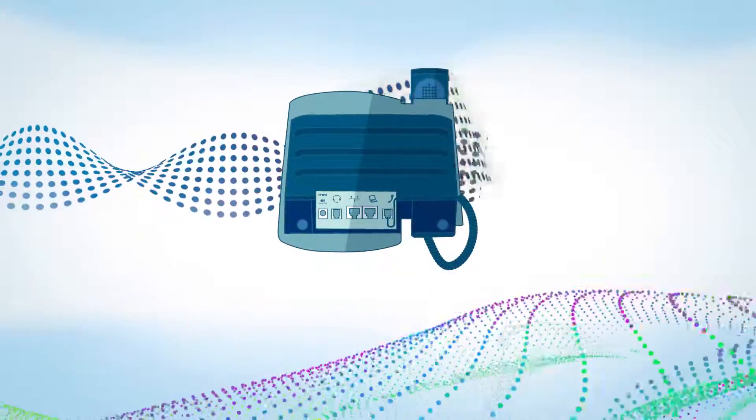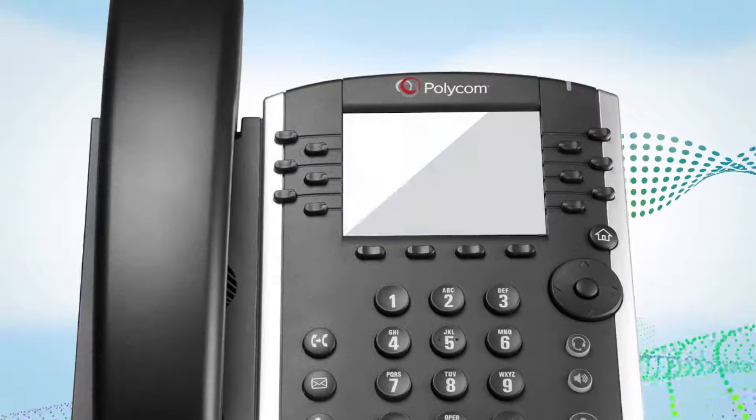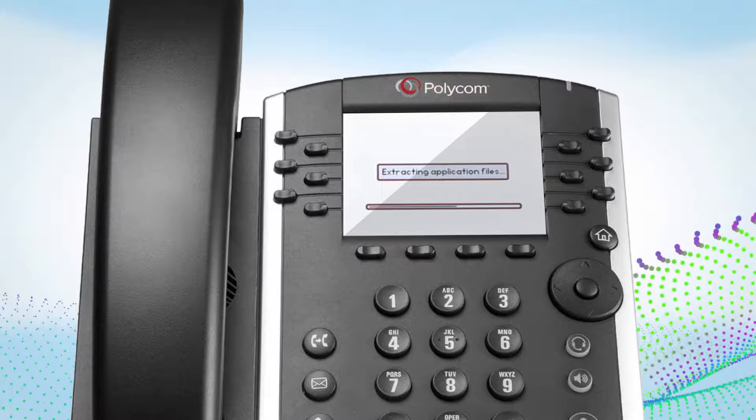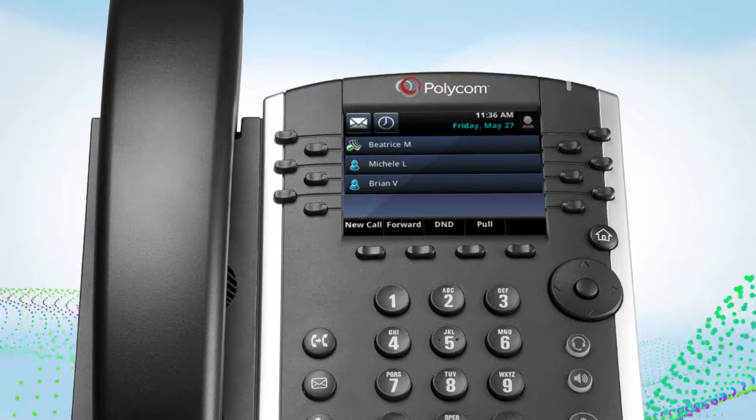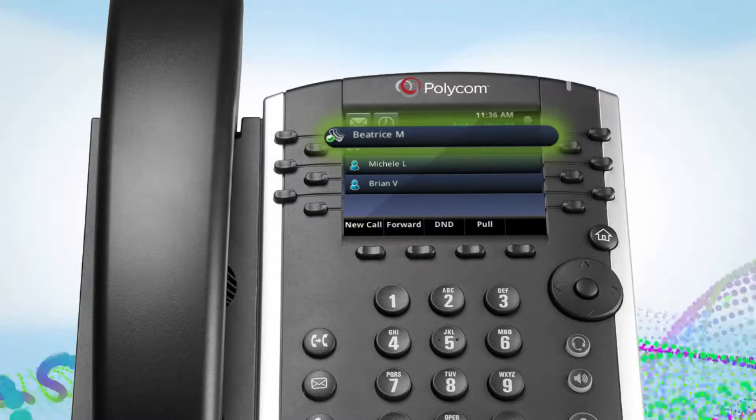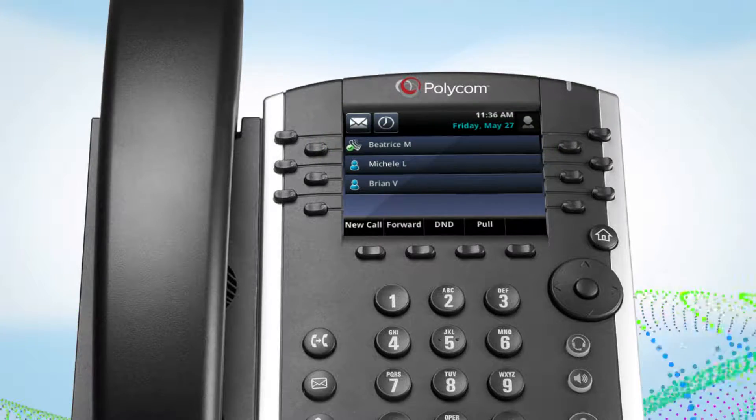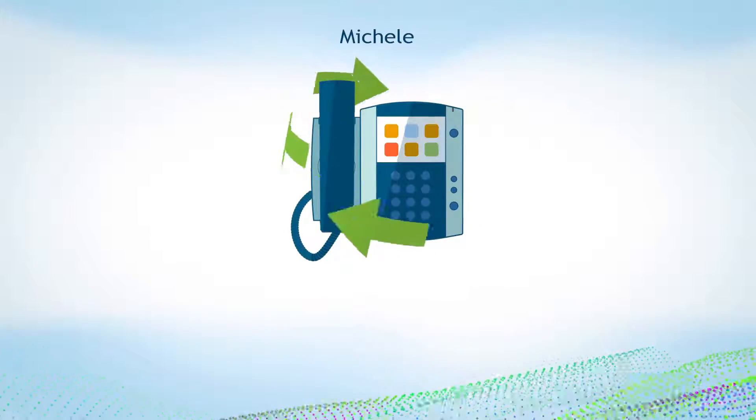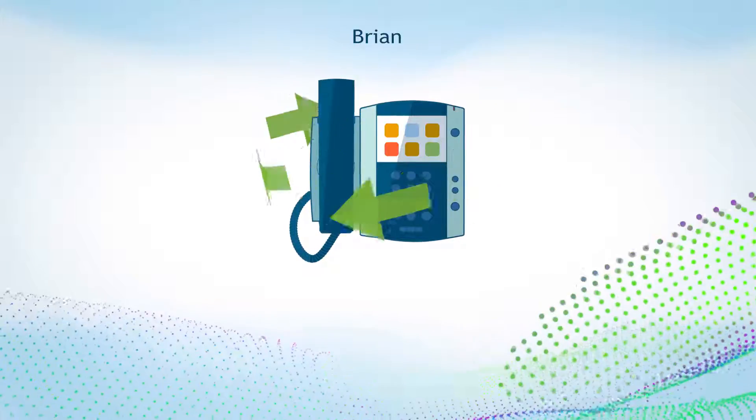Once your phone has power, it will automatically load the required software. It may take several minutes to complete this process. Once the configuration is complete, this screen will appear. Make sure that this phone is configured for the correct person. If not, move it to the appropriate location and repeat the installation process for each new phone in your new system.